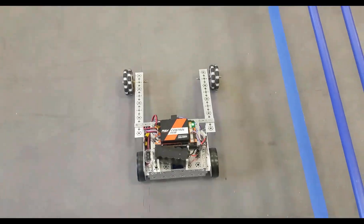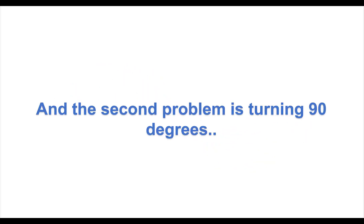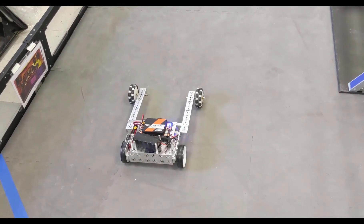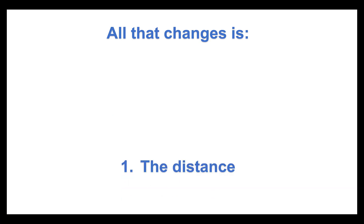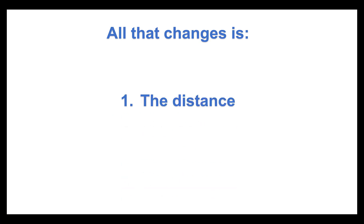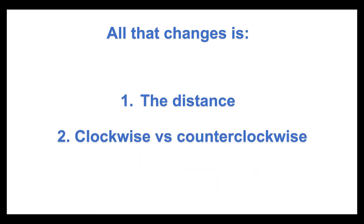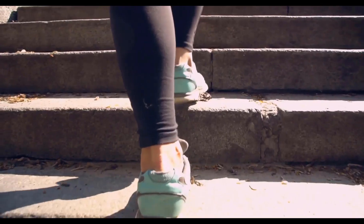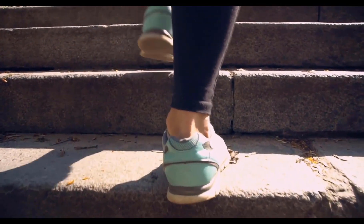It's really like having only two problems. The first problem is driving straight, and the second problem is turning 90 degrees. The only thing that changes is the distance traveled and clockwise versus counterclockwise to turn. So let's look at the first steps required to create the op mode.